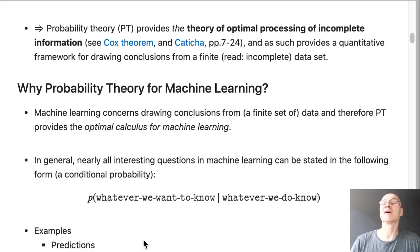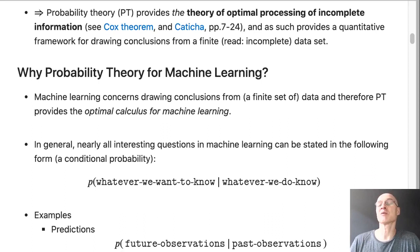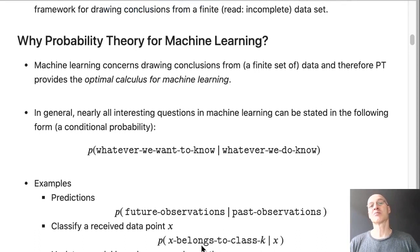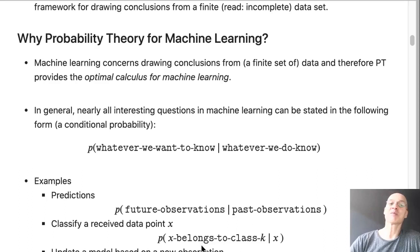In machine learning we can pose nearly every question in this manner: what is the probability of whatever we want to know, given whatever we do know? As an example: what is the probability for some future observations in a time series given my past observations? Or if I receive some features from a fruit, what is the probability that this fruit belongs to the class 'peaches' or 'apples'? It's always the probability for something given whatever I know — and that's what probability theory can compute.